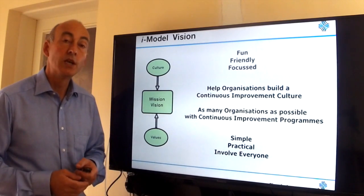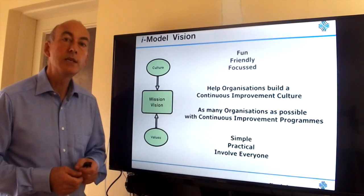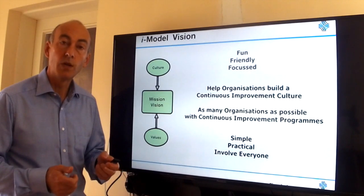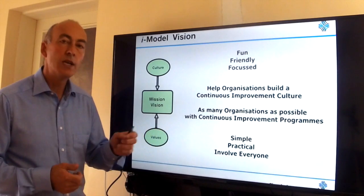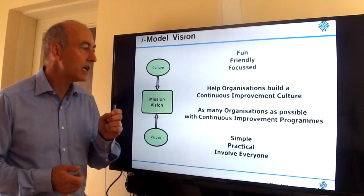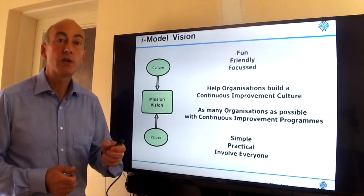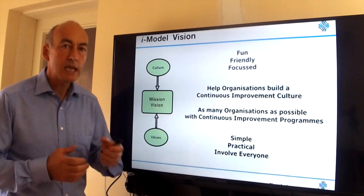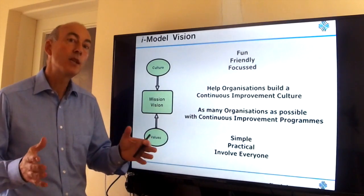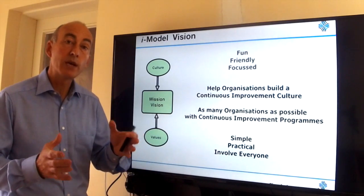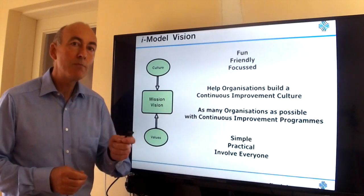Let's start with the first segment, the green segment, which is all about the mission and vision of the organization. Our mission is to help organizations build a continuous improvement culture. Our vision is to have as many organizations as possible with continuous improvement programs, and we're particularly focused on service, transactional, and administrative environments — HR, finance, customer service, charities, government — anything that looks like a modern office.